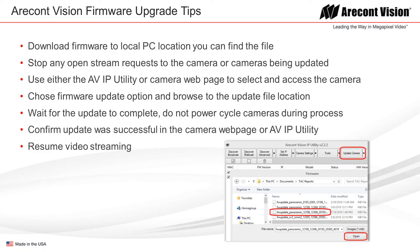The cameras are designed to prioritize streaming live video as their primary task. So if you have any open streams in a VMS, or someone is viewing the camera via the webpage or otherwise, you'll want to stop those open stream requests because that can interfere with the firmware update process — the camera will be more focused on outputting video versus doing an update. Once you've stopped any streams, you have two methods: use the AVIP IP utility to discover cameras and do a bulk upgrade, or go into the camera webpage and access the admin or system menu where you'll see an option for firmware update.